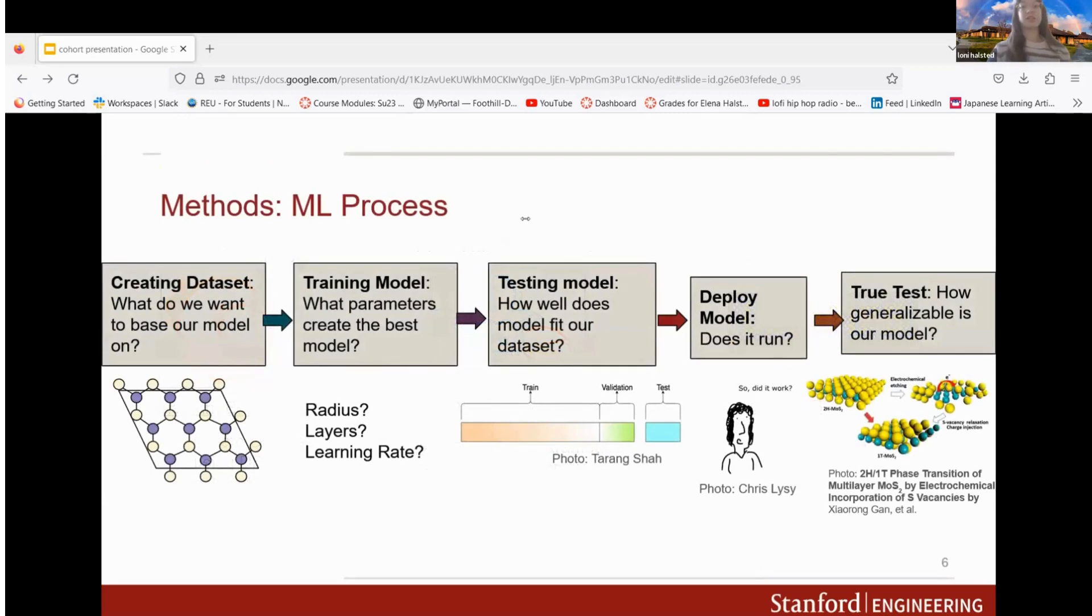Here is the process we created for creating the ML model. First when we create our dataset we ask what do we want to base our model on. Then after we have our dataset we move on to training our model where we ask what parameters are going to create the best model. Finally we want to test our model to see how well it fits the dataset, and then do a true test to see how generalizable our model is.